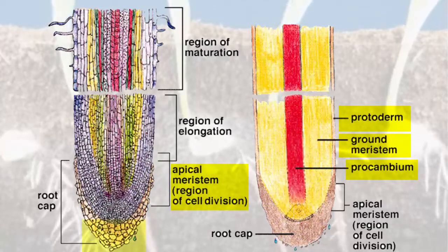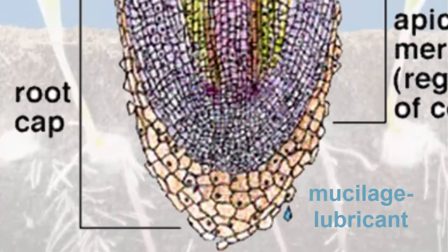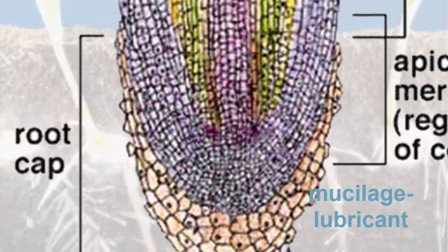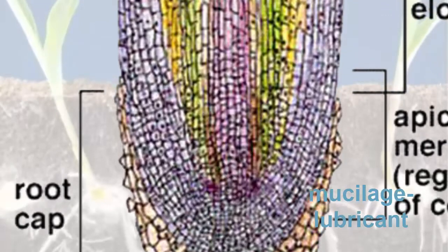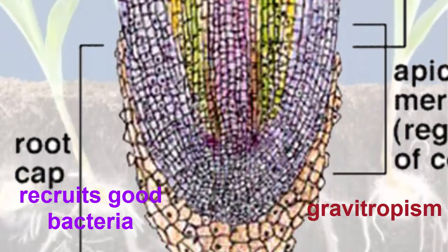The tips are protected by the root cap, a mass of parenchyma cells that produce a lubricating material called mucilage that facilitates the movement of the root tip through the soil. It responds to gravity and it also recruits beneficial bacteria especially the nitrogen fixers.